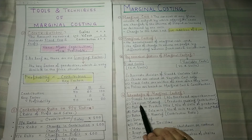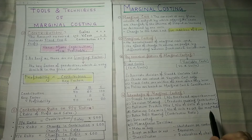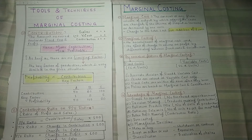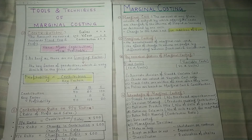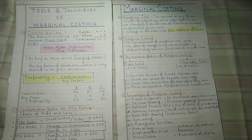The second advantage is decision making. When we are looking at our products and thinking about which ones to manufacture, we look at which is more contributing. Marginal costing is completely based on the concept of contribution.